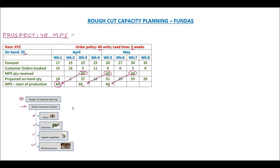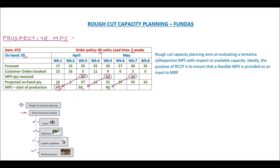Rough cut capacity planning aims at evaluating a tentative or prospective MPS with respect to available capacity. The purpose is to ensure that a feasible MPS is provided as an input to the MRP plan. If the MPS itself is not feasible — meaning you don't have the capacity to produce what you are planning — then your MRP is also not going to be feasible. So RCCP is done first to ensure the MPS is feasible, so that later on there are no challenges.